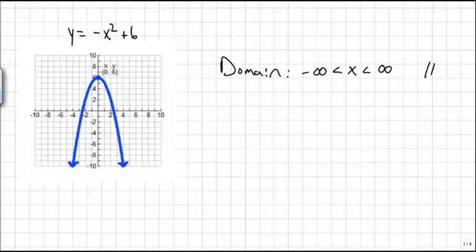Sometimes you might see this fancy script R written for all real numbers, it looks like an R with a double bar through it. If you want to write this with interval notation, since these are not equal to inequalities, you want to use parentheses: negative infinity comma infinity enclosed in parentheses.